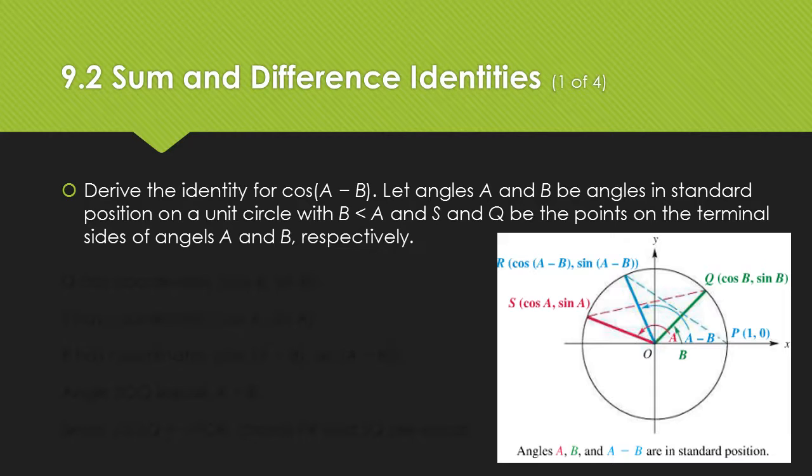S and Q are going to be the points they intersect on the circle, the points on the terminal side. As we've learned before, the x value is the cosine of the angle, the y value is the sine of the angle. So Q has the coordinates cosine B, sine B, and S has the coordinates cosine A, sine A.